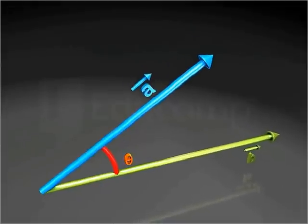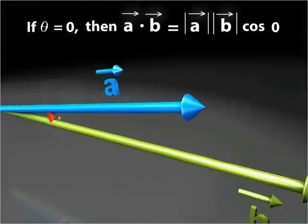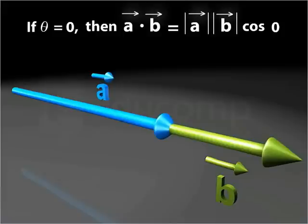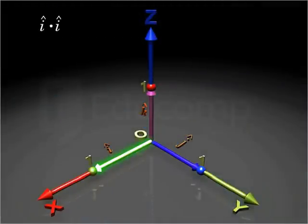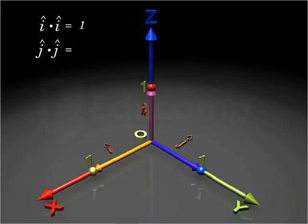The dot product of two vectors is maximum when theta is equal to 0, as cos theta has its maximum value of 1 when theta is equal to 0. This helps us conclude that the dot product of unit vector I cap with itself is equal to 1. Similarly, J cap dot J cap is equal to 1 and K cap dot K cap is also equal to 1.